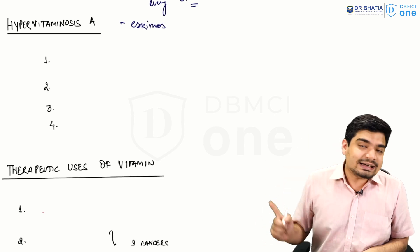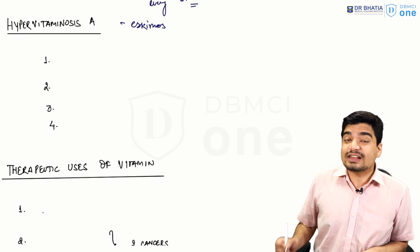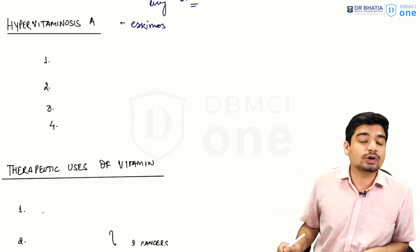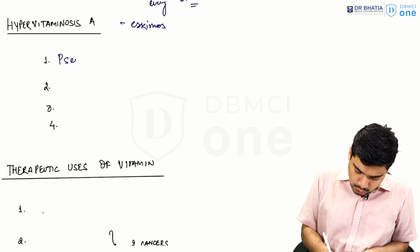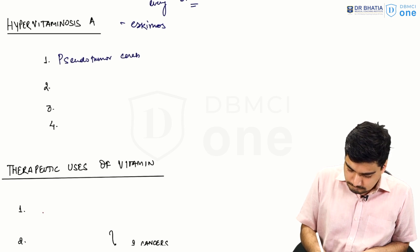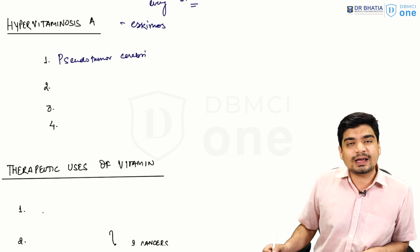Now, what are the symptoms? The characteristic symptom of hypervitaminosis A, excess of vitamin A, is what is called pseudotumor cerebrii. What is pseudotumor cerebrii?